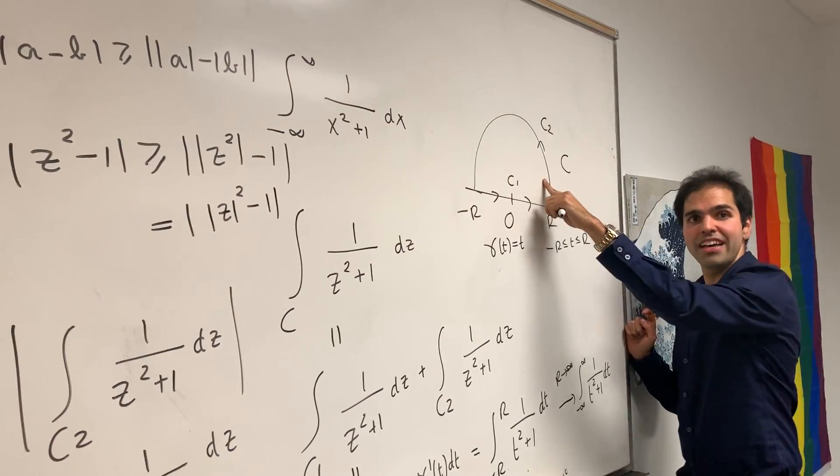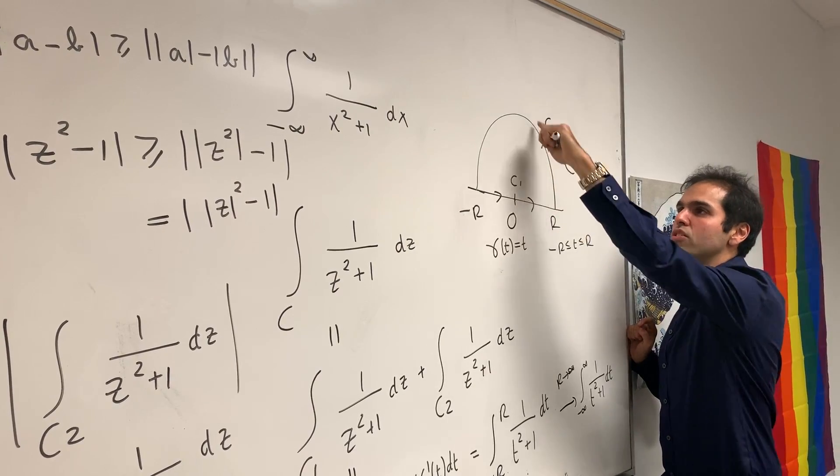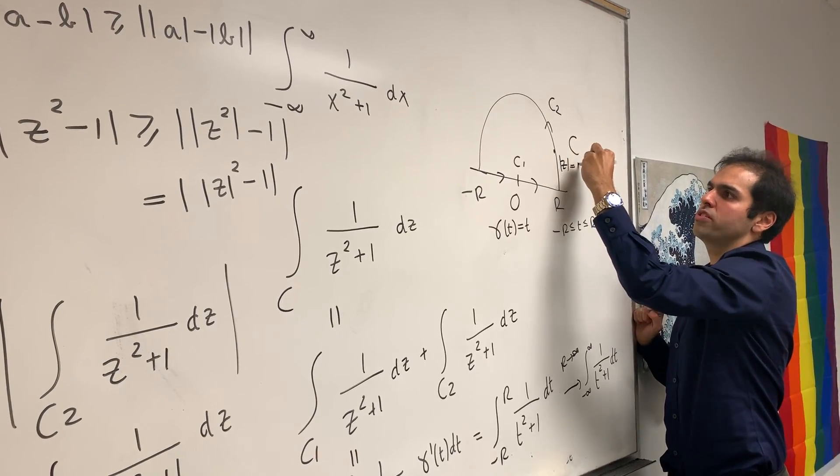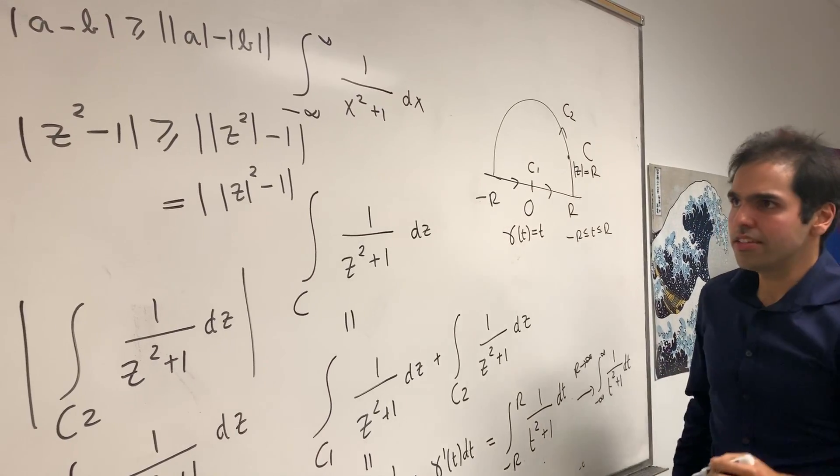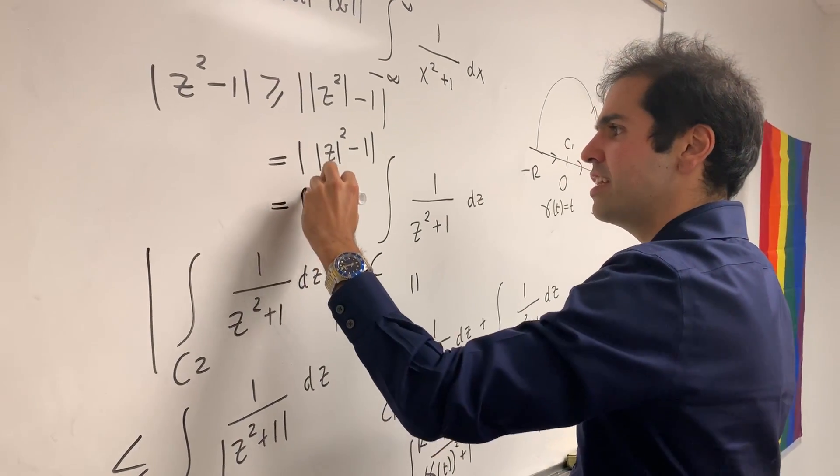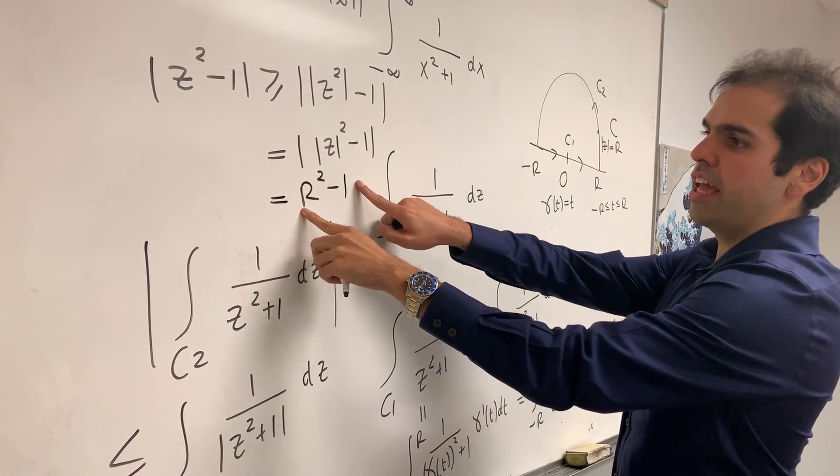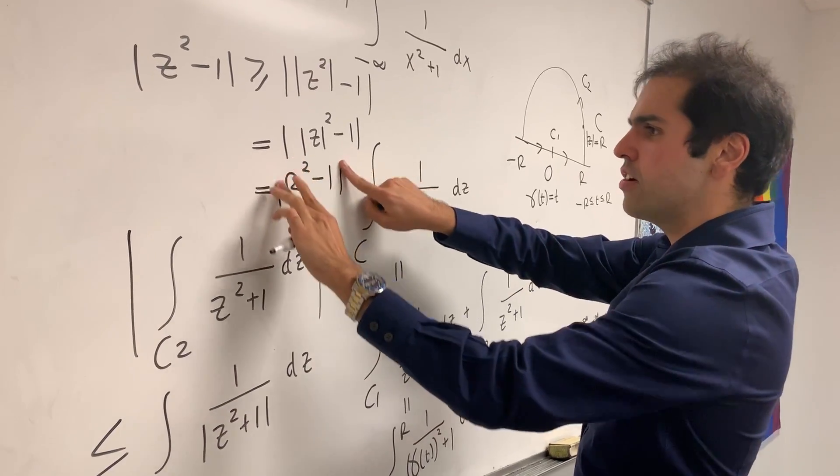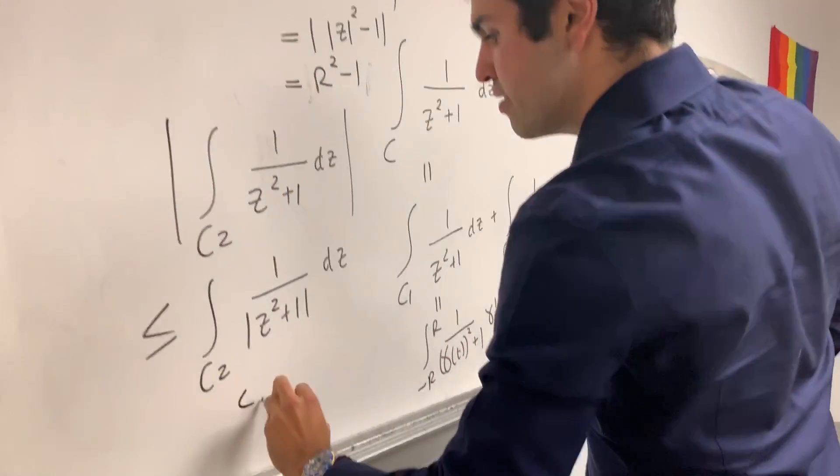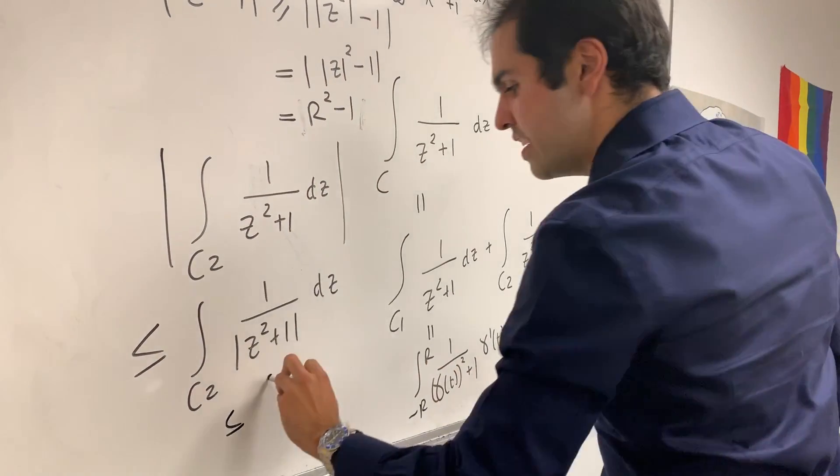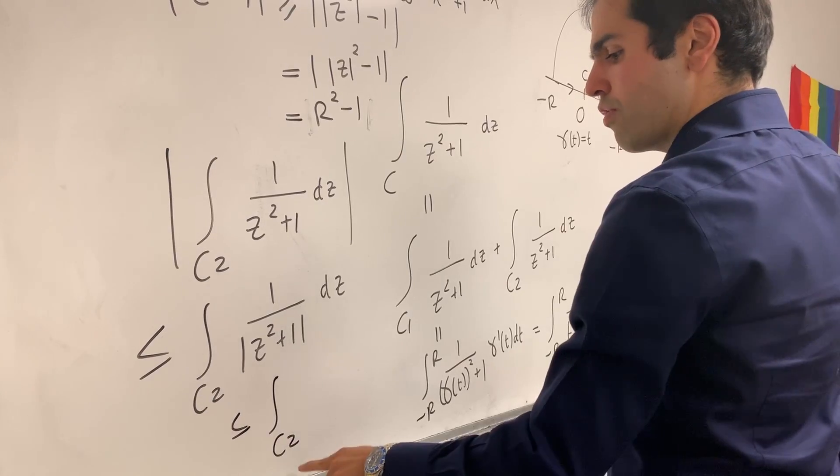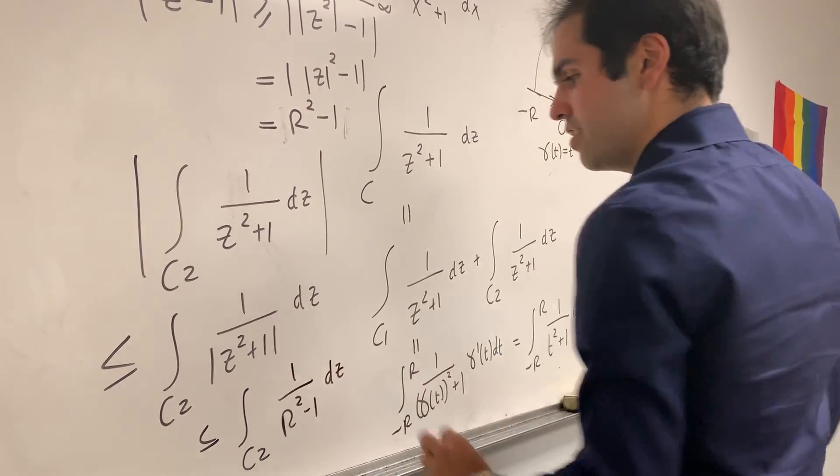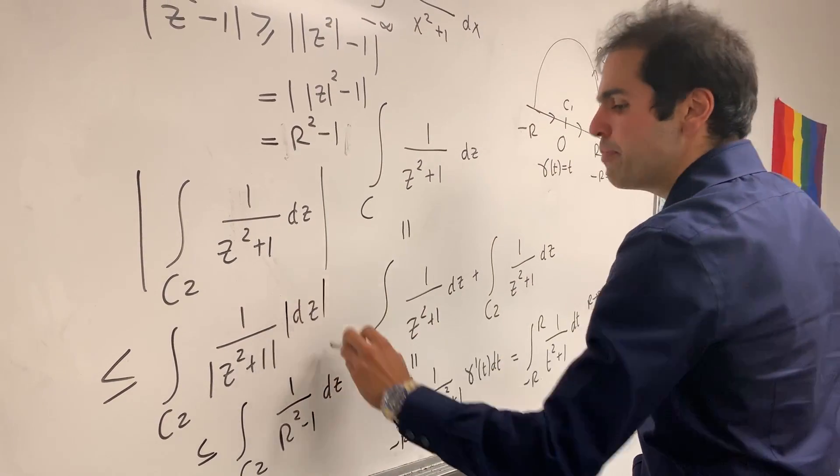And so in this case, we get absolute value of z squared minus 1. And this is just absolute value of the absolute value of z squared minus 1. But look, here is precisely where we need the circle. The circle, you know, if you have a number on that circle, well, the absolute value is precisely r. So what you're left with, this becomes precisely r squared minus 1. Technically absolute value, but if r is big, this is positive.